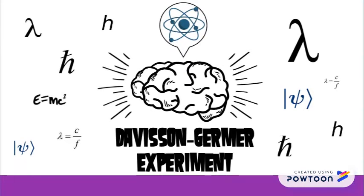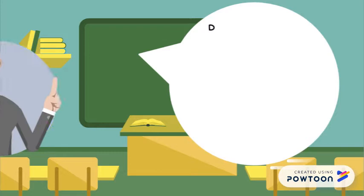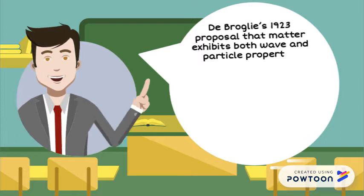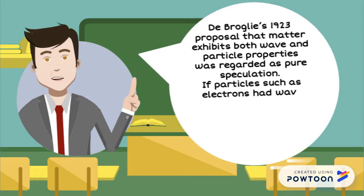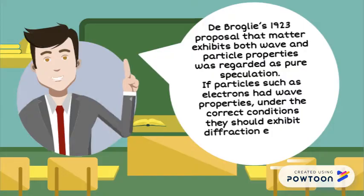Davison-Germer Experiment. De Broglie's 1923 proposal that matter exhibits both wave and particle properties was regarded as pure speculation. If particles such as electrons had wave properties, under the correct conditions they should exhibit diffraction effects.